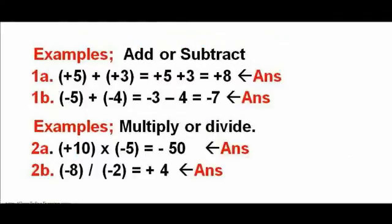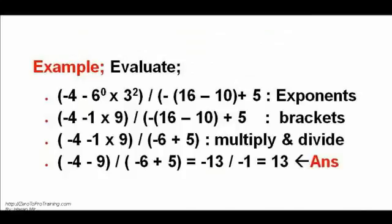Exercise 1a and 1b: answers are 8 and −7. Exercises 2a and 2b — multiply and divide — answers are −50 and 4 respectively. Exercise 3: evaluate using the order of operations — exponents, brackets, multiply, divide, add, and subtract — the answer is 13.